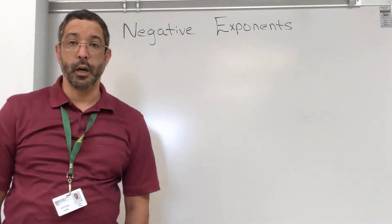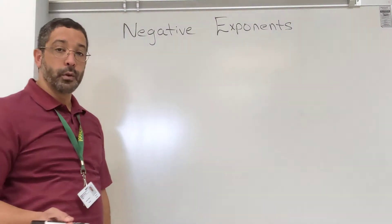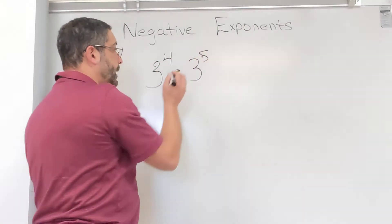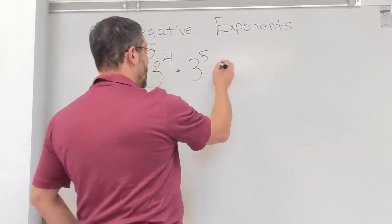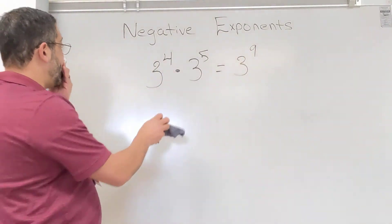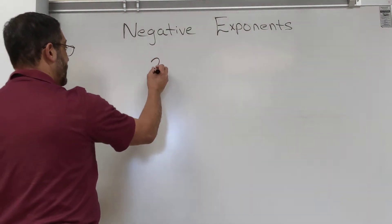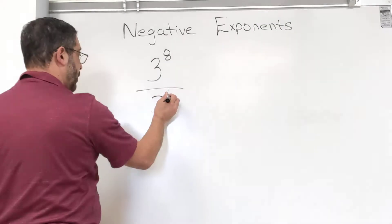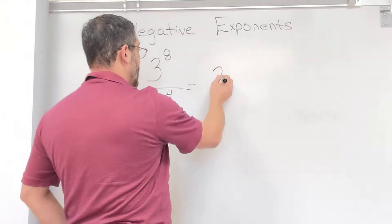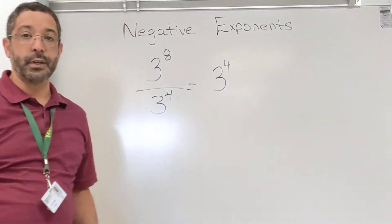So today we're going to go over what negative exponents are. Let's begin with what we already know. We know our rules of exponents: if I have 3 to the fourth times 3 to the fifth, I keep my base and add my exponents, which gives me 3 to the ninth power. And if I have 3 to the eighth divided by 3 to the fourth, I keep the base but subtract my exponents, giving me 3 to the fourth power.